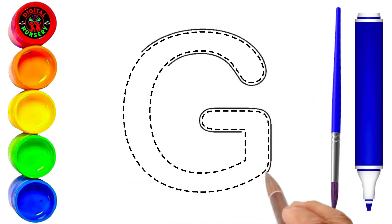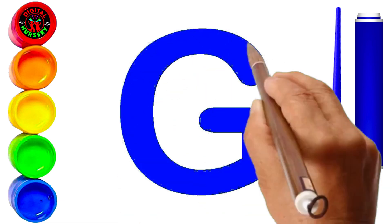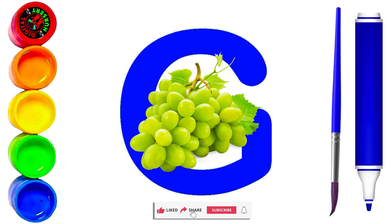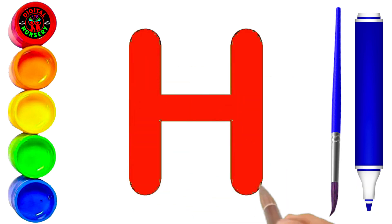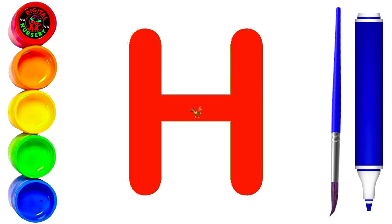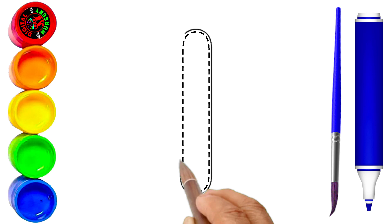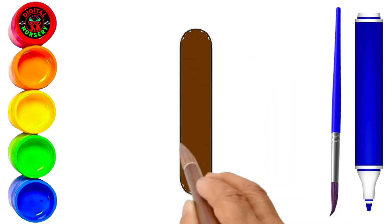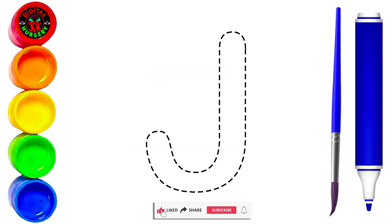G. We are tracing capital G letter by blue color. Wow, blue color of capital G. Good. Yes, G is for grapes. H. We are tracing capital H letter by red color. Yes, red color of capital H. Great. Yes, H is for hen. I. We are tracing capital I letter by brown color. Yes, brown color of capital I. Wow, you are best. I is for ice cream.